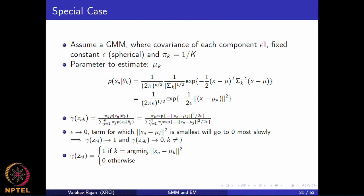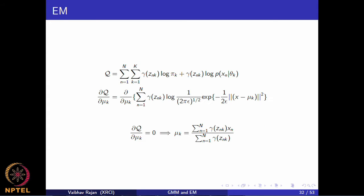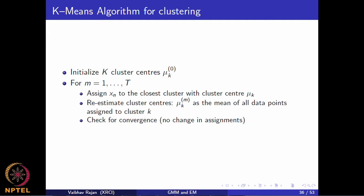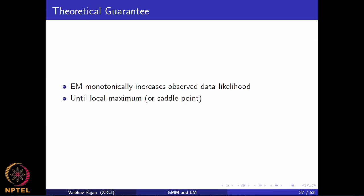If we take only μ_k as the parameter to be determined — assuming all Gaussians are spherical with known covariance matrices and π_k set to 1/k — then what we get back is the k-means algorithm. The theoretical guarantee is that EM monotonically increases the observed data likelihood until it reaches some local maximum. It can also get stuck at a saddle point, and it does not give you the global maximum — only a local maximum.